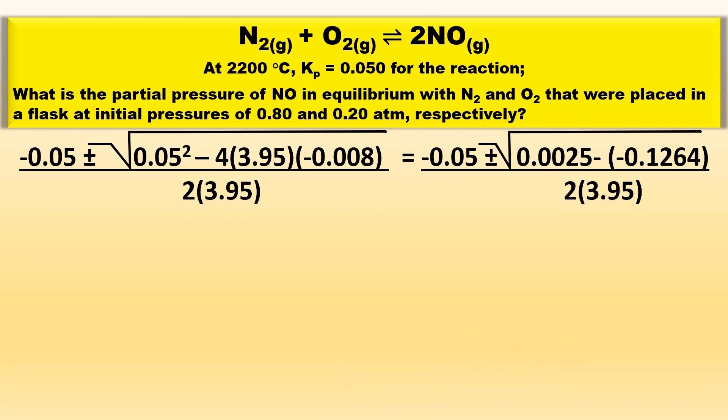This simplifies to negative 0.05 plus or minus the square root of 0.0025 minus negative 0.1264, all divided by 2 times 3.95.